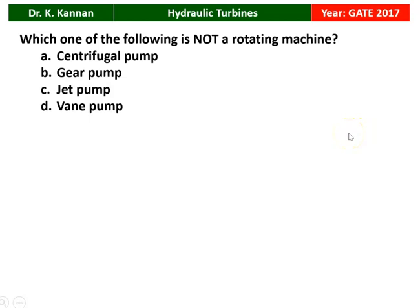The next question is from the 2017 question paper. Which one of the following is not a rotating hydraulic machine? We have four options: centrifugal pump, gear pump, jet pump, and vane pump. Among the four, the jet pump is not a rotating machine. The other three are rotating machines — they raise the pressure of the fluid using an impeller. The jet pump works on the principle of a jet: a jet of water is produced which pushes the water to a higher level. So, jet pump is the answer.